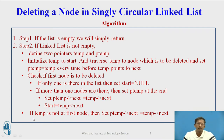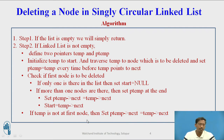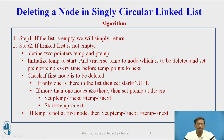If the node to be deleted is not the first node, set ptemp->next equal to temp->next. For all these cases, write one extra step: free(temp). You have to free whatever memory was allocated for temp. This completes the algorithm for deleting a node from a singly circular linked list.